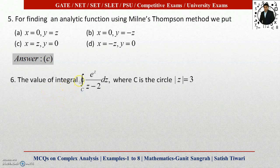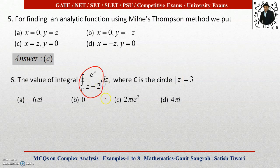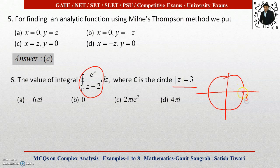Next, example six: the value of the integral over a closed curve C of e^z / (z − 2) dz, where C is the circle |z| = 3. To solve this complex integral, we first check the poles of the function. Setting the denominator to zero: z = 2 is a pole of order 1, also called a simple pole, since (z − 2) has power 1.